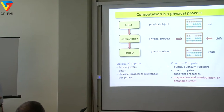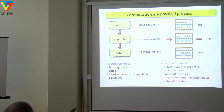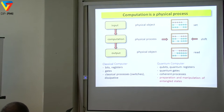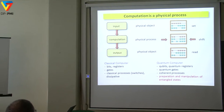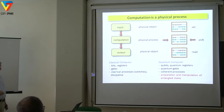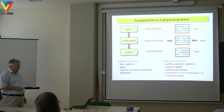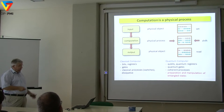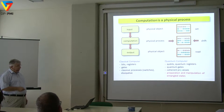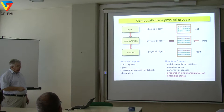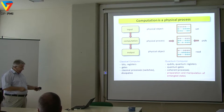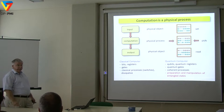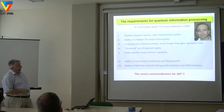Whereas in a quantum computer, we need to find the equivalent: we need quantum bits, quantum registers, and quantum gates. Usually we have not switches, but projections. We have coherent processes and we need to prepare and manipulate entangled states to keep and preserve the coherence in the system. These are again the DiVincenzo criteria — there are seven criteria.